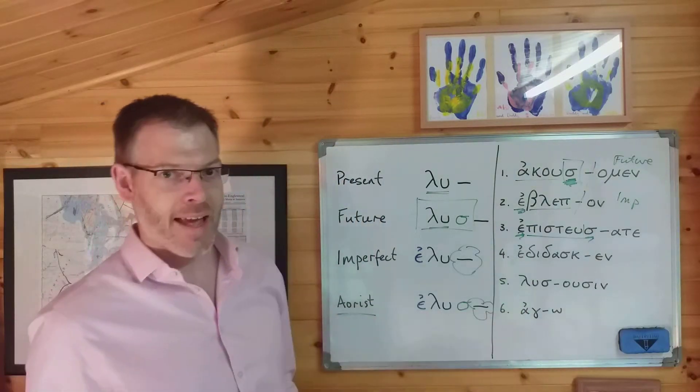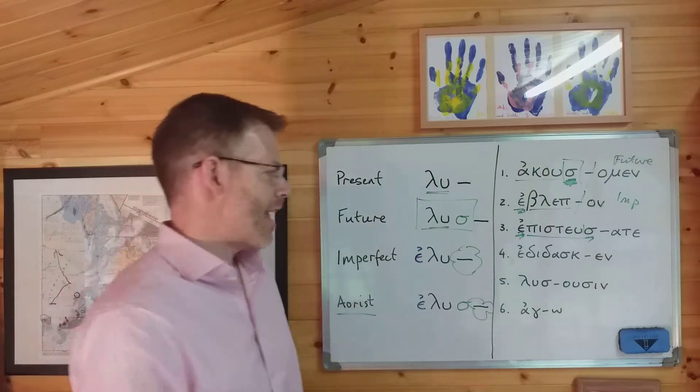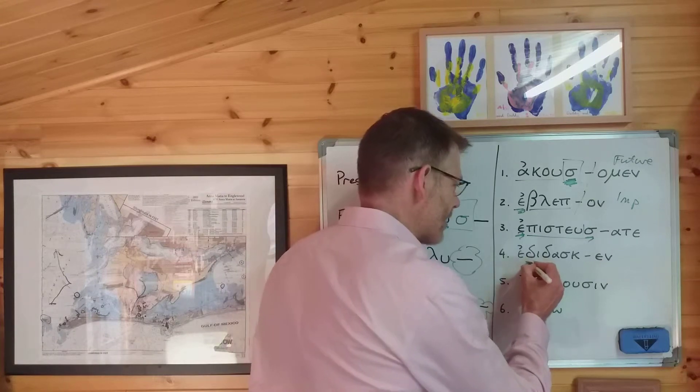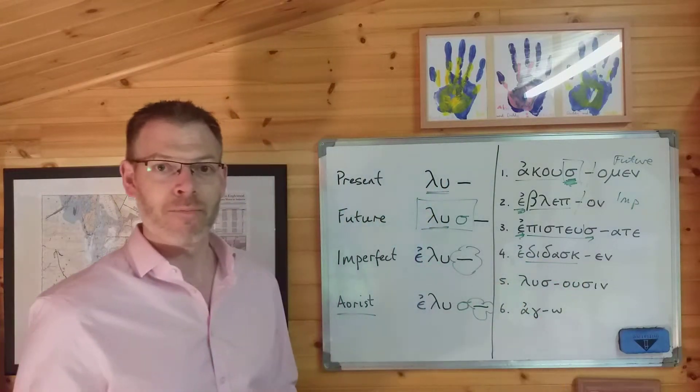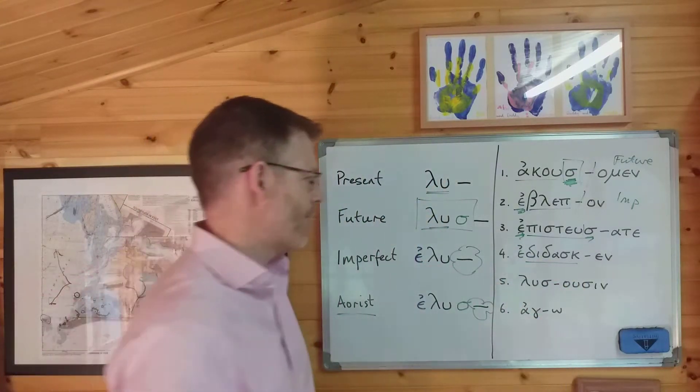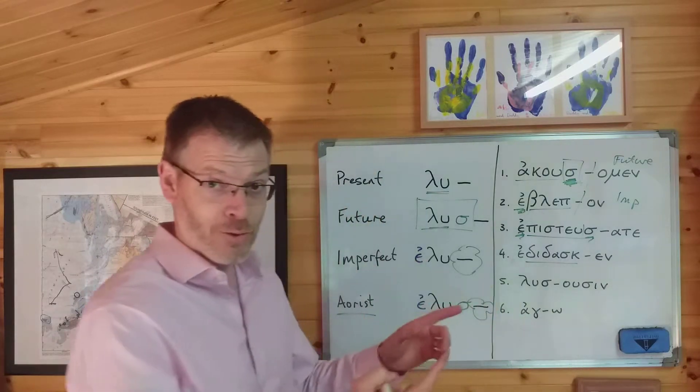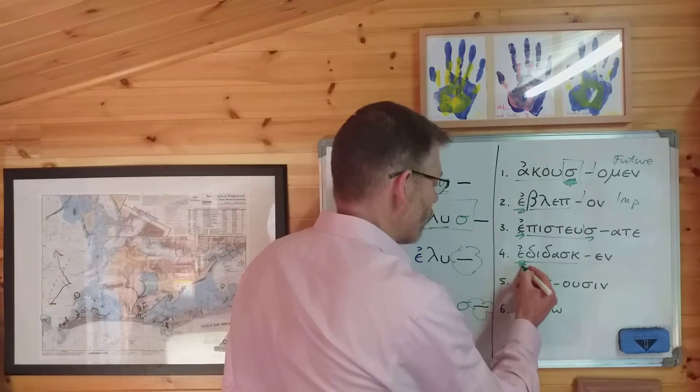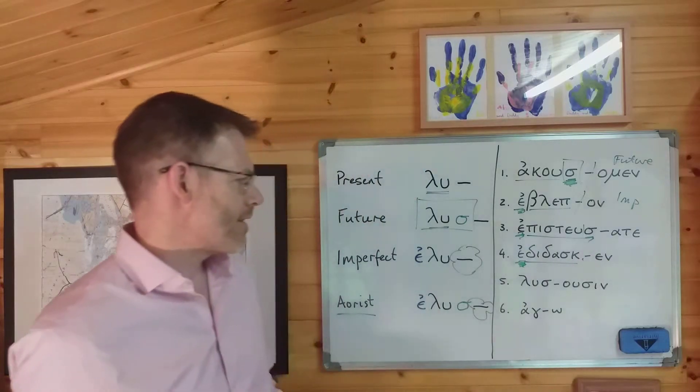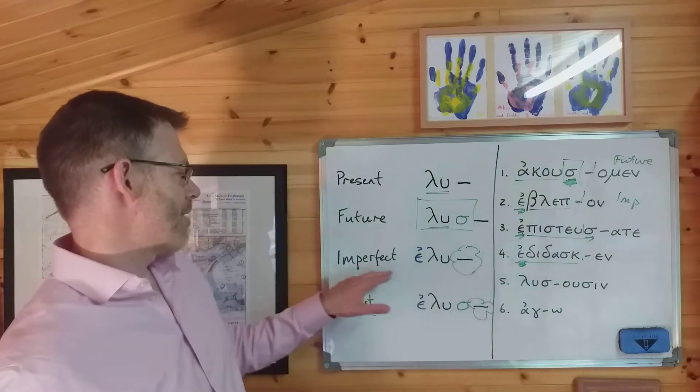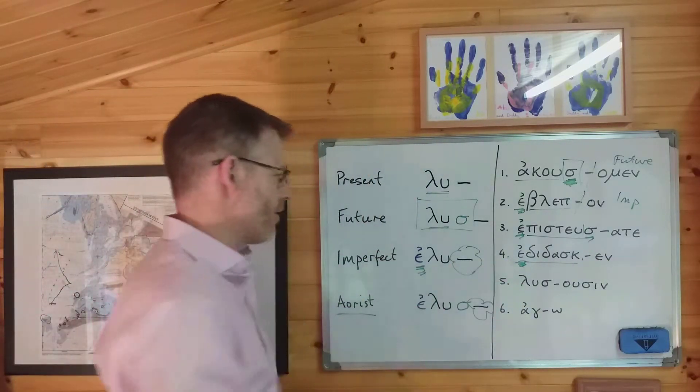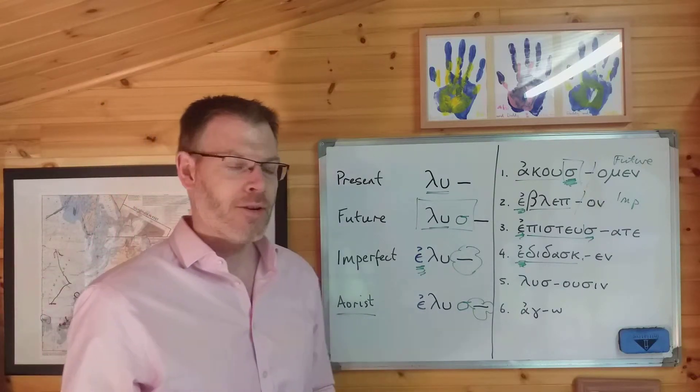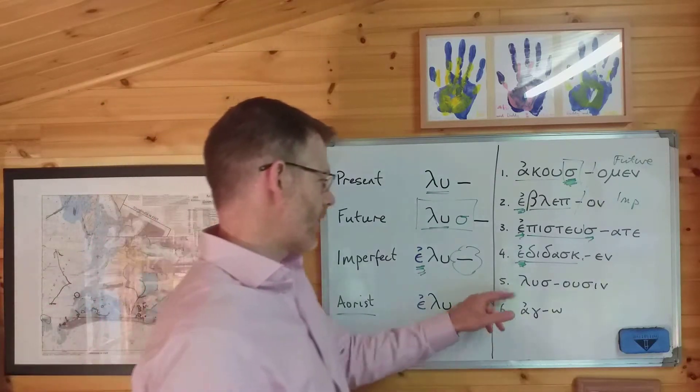Number four, εδιδασκεν. Ignore the ending. Find the stem. Where's the stem? The stem is διδασκ, from διδασκω, meaning I teach. Does it have an epsilon augment? Does it have a sigma suffix? Yes to the epsilon augment. No to the sigma suffix. So that εδιδασκεν means it's imperfect, because it's got the epsilon augment but no sigma suffix.